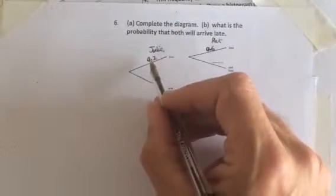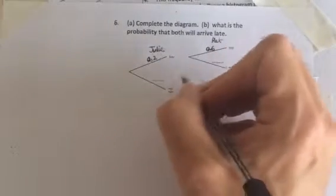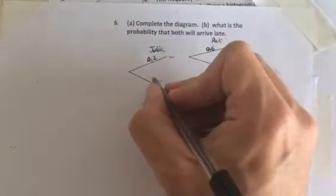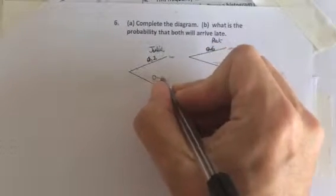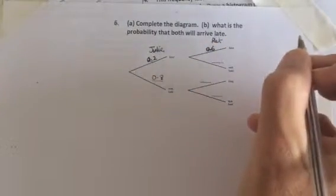First of all, complete the diagram. If Julie is late with probability 0.2, she's got to be either late or not late. It's certain, or probability of one, that she is either late or not late. She can't be both, so that must be equal to 1 minus 0.2, which is 0.8.